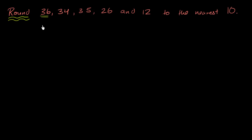So what are multiples of 10? 10 times 0 is 0, 10 times 1 is 10, 20, 30, 40, 50, 60, so on and so forth.